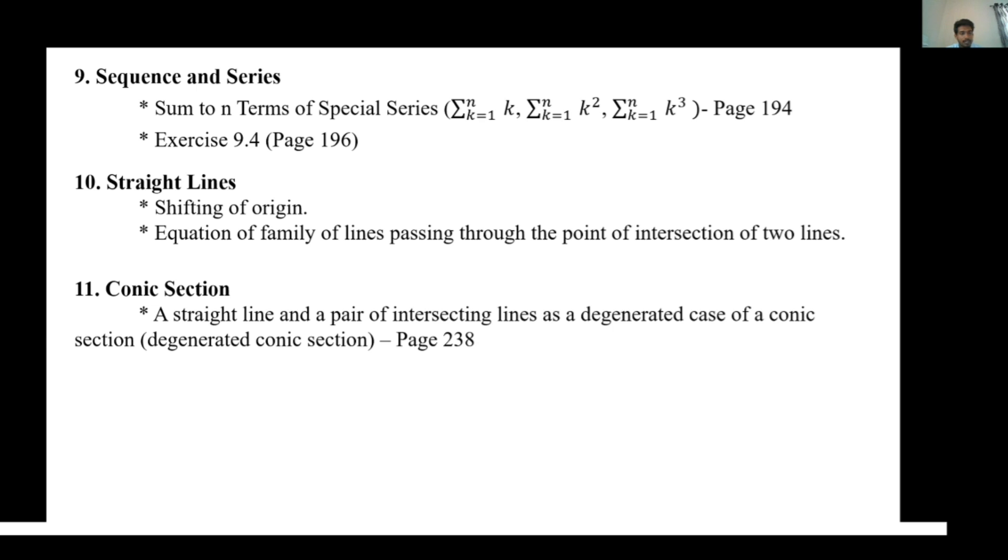Conic Section, Chapter 11: A straight line and a pair of intersecting lines as a degenerated case of a conic section, that is degenerate conic section on page 238, has been deleted.